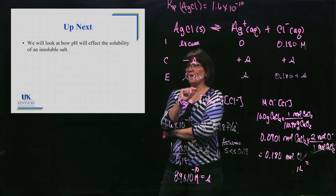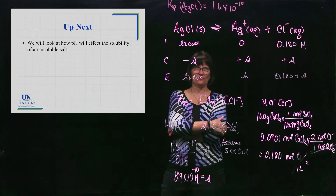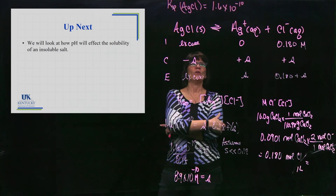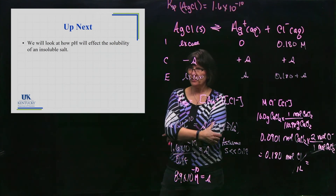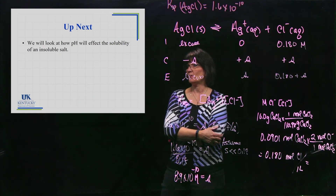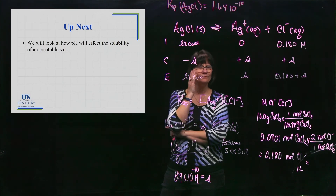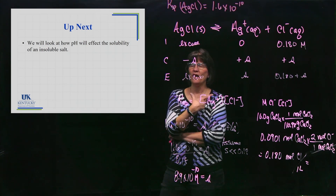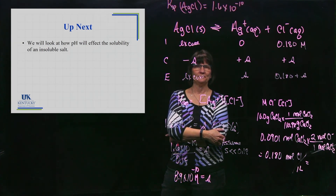So what we're going to do next is see how pH affects the solubility. We've seen that a common ion always decreases the solubility. In the same way — not exactly the same way — pH can also have an effect on the solubility of a salt.